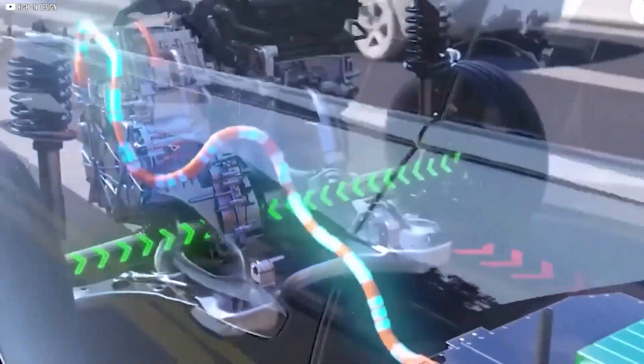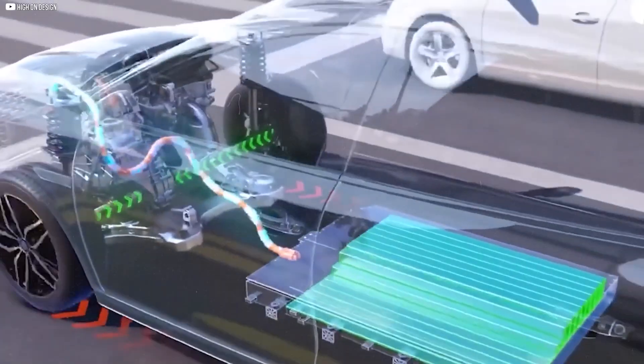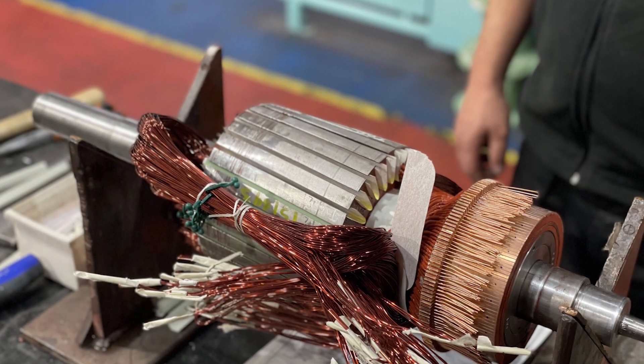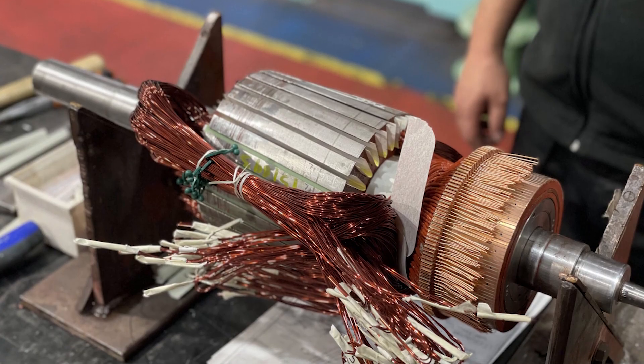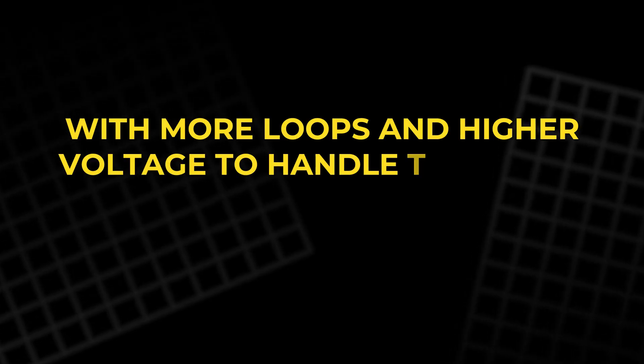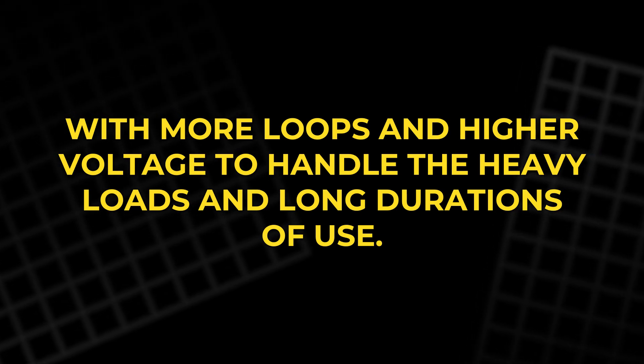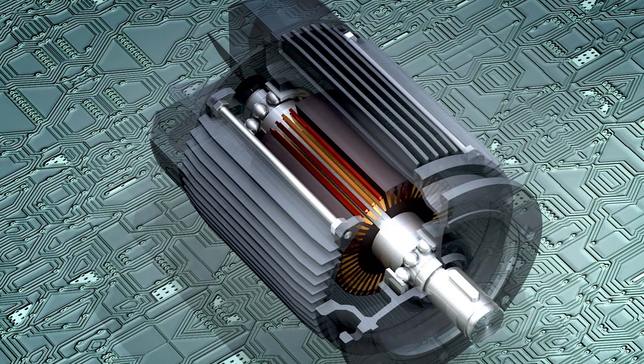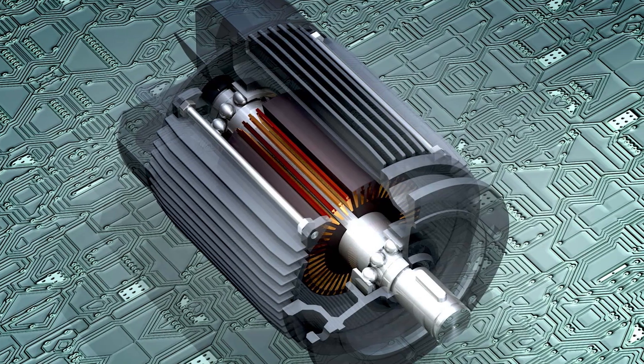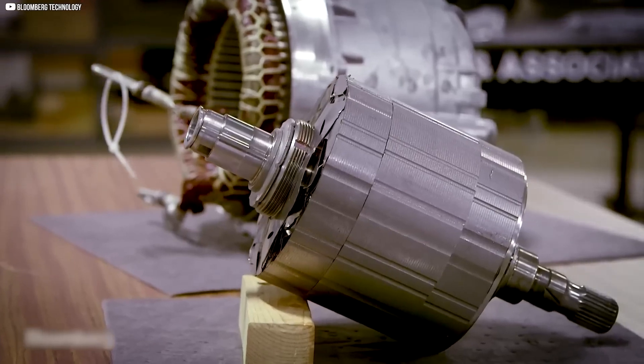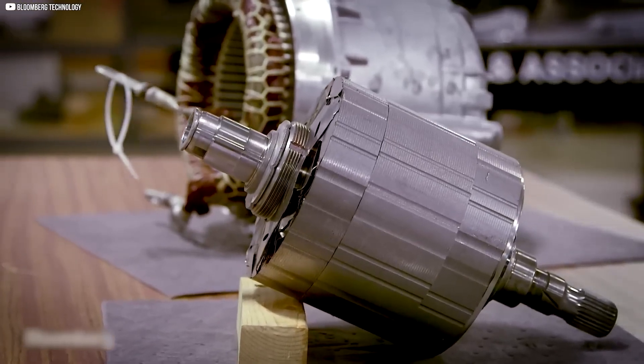Motors are also at the heart of larger systems like electric cars and industrial machinery. In these cases, motors need to be even more powerful, with more loops and higher voltage to handle the heavy loads and long durations of use. The beauty of electric motors is their ability to transform electrical energy into motion, making them one of the most fundamental components in modern technology.